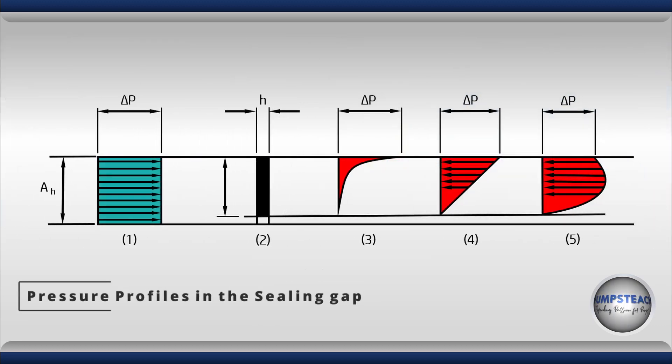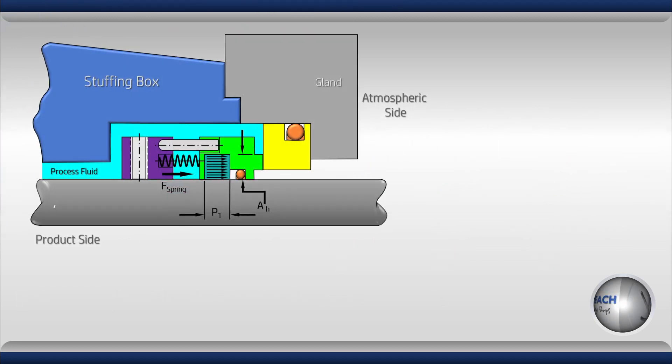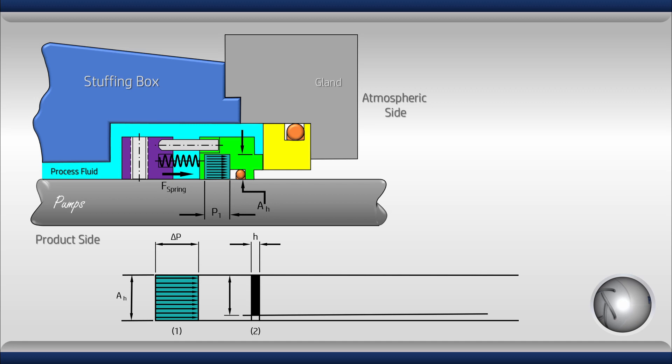In the next figure, we can see three simplified and idealized pressure profiles in the sealing gap. When the shaft is static, the pressure in the seal gap is nearly zero and thus the seal face load is directly supported by the stationary mating ring contact between the seal face materials.